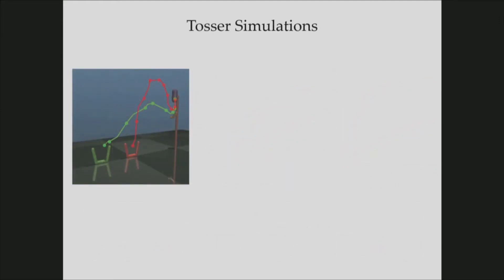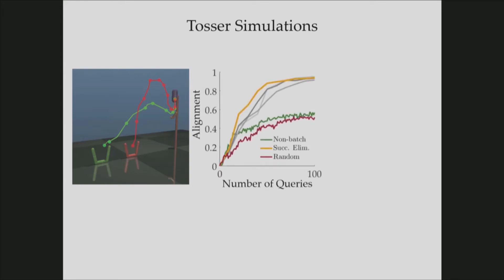We also did the same analysis with the tosser task. This task is from Mujoco, and the aim is to throw the ball into the green basket, or either into the green basket or the red basket, and the choice depends on the human's preference. So we have seen something very interesting when we plotted the alignment with respect to number of queries. What we have seen is non-batch active methods was performing highly suboptimally, even with number of queries. This is because it tries to solve a non-convex continuous optimization, and it can get stuck in local optima.